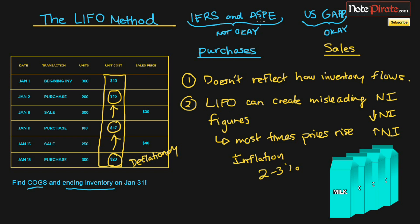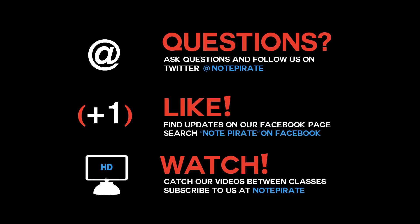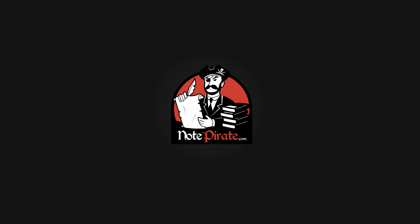So that's why LIFO is no longer used, even though it's still permitted under US GAAP but not under IFRS, ASPE, or Canadian GAAP. I think I've covered most of what I wanted to in this unit regarding inventory expensing. Make sure to subscribe, and I'll see you in the next video. If you have questions, you can tweet us at Note Pirate or like us on Facebook. Thanks for watching.